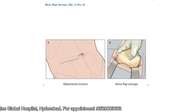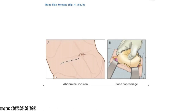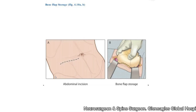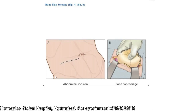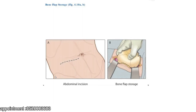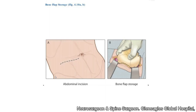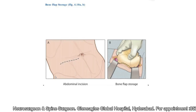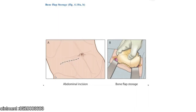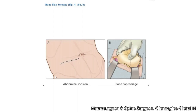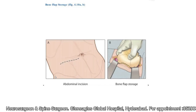With blunt dissection, I develop a proper plane above the rectus sheath and laterally above the oblique muscles. I ensure proper hemostasis and place the bone flap with the convex surface outside. If the patient is very thin and lean and I cannot develop a sufficient pocket, I sometimes divide the bone flap into two pieces and stack them one above the other. What is most important is that once I place the bone flap, there should be no tension in the skin when I close it, as tension may cause the sutures not to heal and there are chances of necrosis.